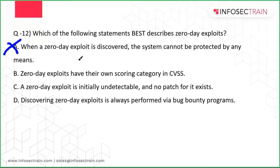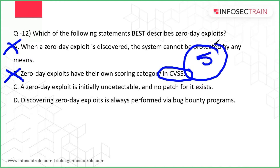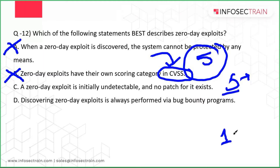Option B says zero-day exploits have their own scoring categories in the CVSS — that's the Common Vulnerability Scoring System. That's absolutely not correct. The CVSS is used when an organization, say Apple, has multiple vulnerabilities. They categorize them by score — this vulnerability scores five, this one scores one — to prioritize which to fix first.